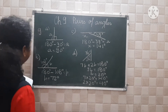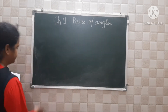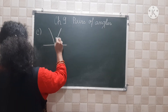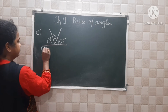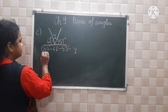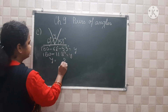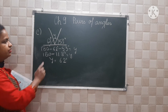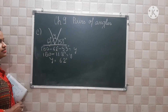For part E, the angles on the straight line are 62 degrees, Y, and 53 degrees. So 180 minus 62 minus 53 equals Y. That gives 180 minus 115, so Y is equal to 65 degrees. Wait — the sum of 62 and 53 is 115, so Y equals 65 degrees.